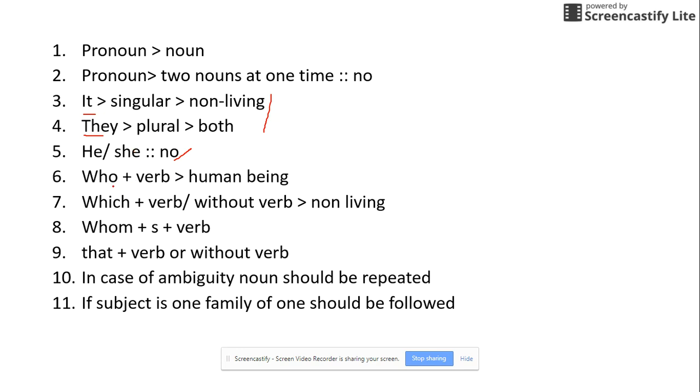Next important information: whenever there is who, after who there must be a verb. Second information for who: it is used always for human beings. Next is which, that's also part of the pronoun.